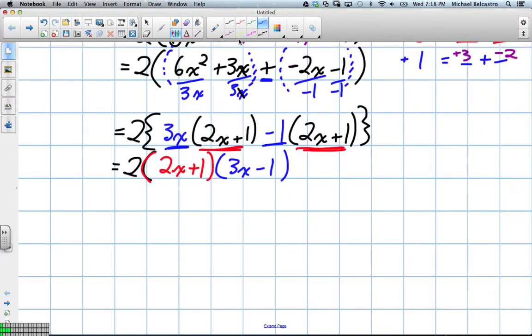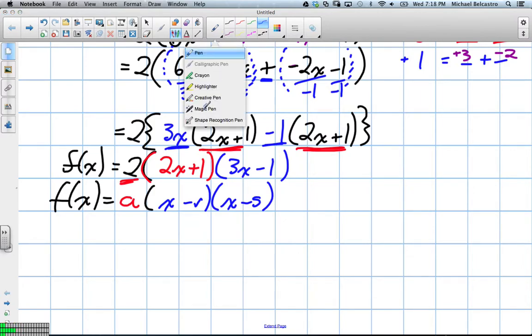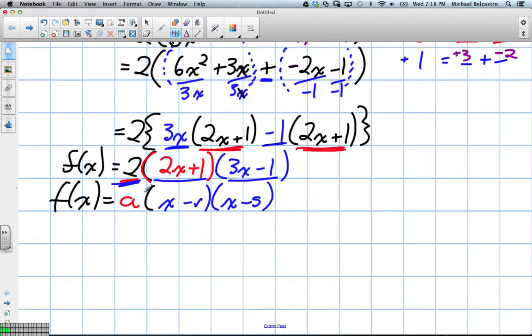The common factor is our 2. Remember, so we have f(x) is equal to, and remember factored form said is equal to a. Well, our a term is our 2. And then we have our x minus r and x minus s. So we look very similar now. We have our two sets of brackets and our a term on the outside.